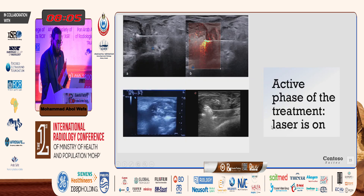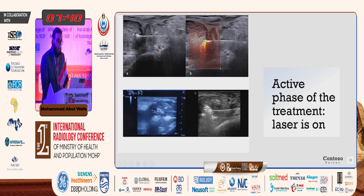When we start the laser ablation, air bubbles will result and increase with time. We can see the air bubbles in front of the needle — here shown with two needles applied in the prostate. After some time, a large ablation zone becomes visible in front of the needle and surrounding the tip of the fiber.